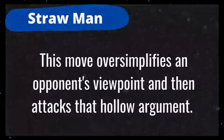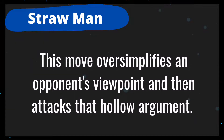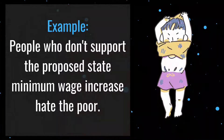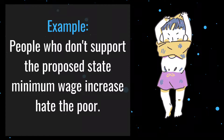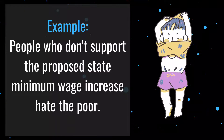Number 11 is straw man. This move oversimplifies an opponent's viewpoint and then attacks the hollow argument. For example: people who don't support the proposed state minimum wage increase hate the poor. In this example, the author attributes the worst possible motive to an opponent's position. In reality, however, the opposition probably has more complex and sympathetic arguments to support their point. By not addressing those arguments, the author is not treating the opposition with respect or refuting their position.